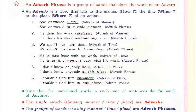'He is at this moment busy with his work.' Fifth: 'I don't know anybody here.' It is an adverb of place. Adverb phrase: 'I don't know anybody at this place.' 'At this place' is an adverb phrase. Sixth: 'I couldn't find him anywhere.' 'Anywhere' is an adverb of place. Adverb phrase: 'I couldn't find him at any place.' It is a group of words, so it is an adverb phrase.